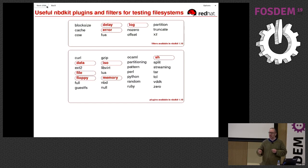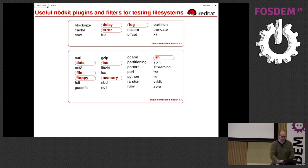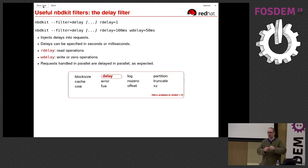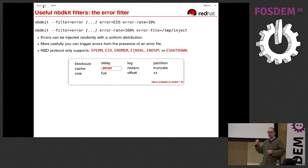The first testing filter is the delay filter. You can inject delays into nbdkit requests, specifying seconds or milliseconds. This is useful if you're testing a distributed file system on one machine and want to simulate a remote node with a long delay. The error filter injects errors — an obvious use for testing. One way is to specify a particular error and a generalized error rate of 10%, meaning 10% of requests will fail at random.